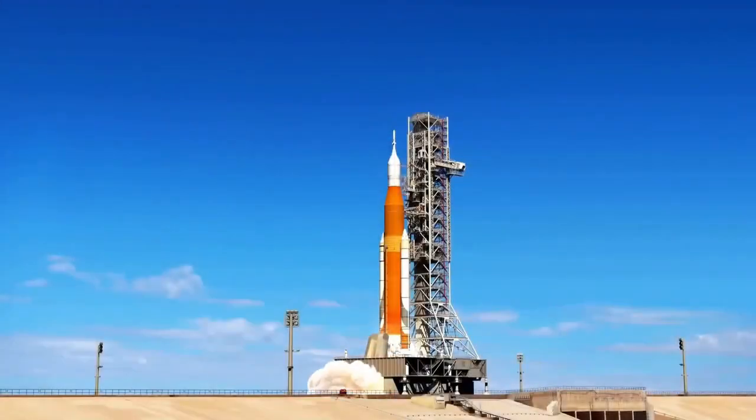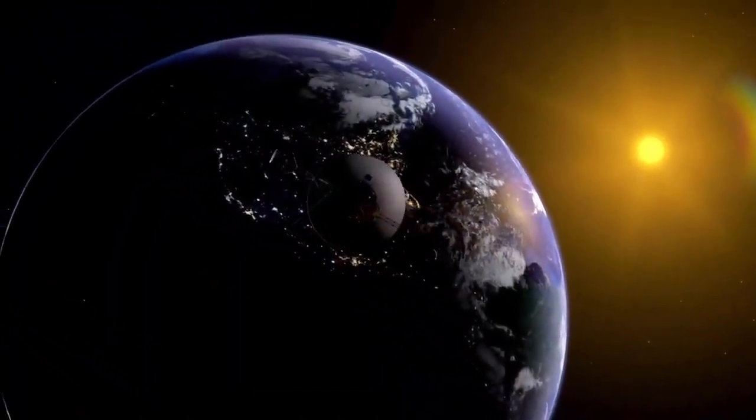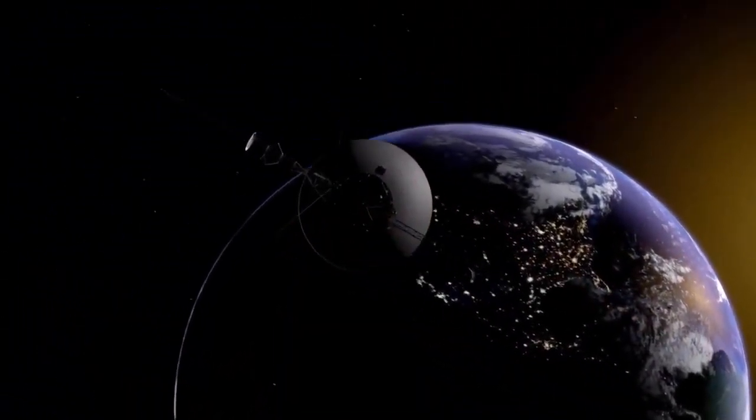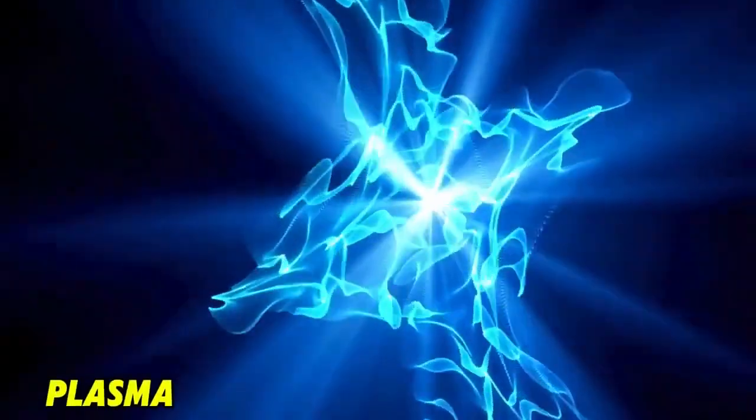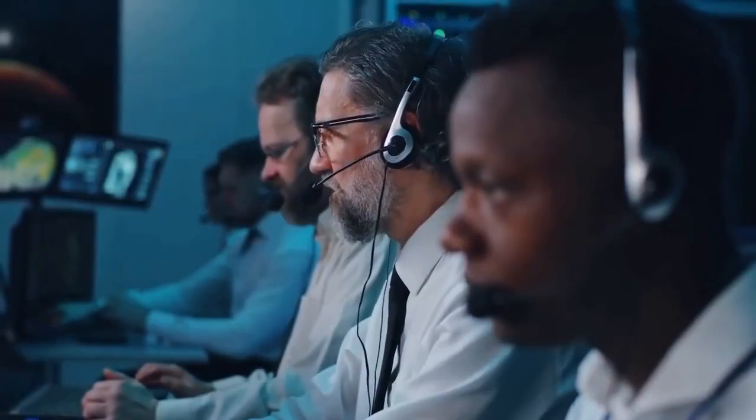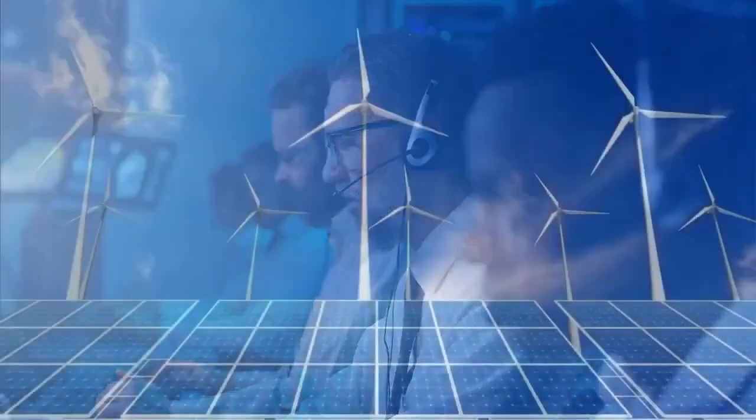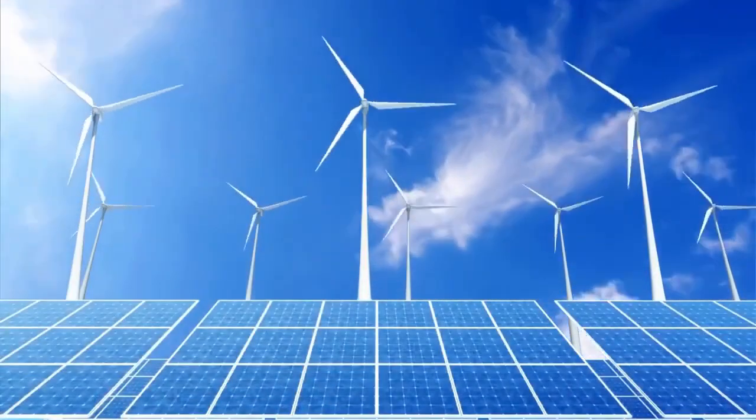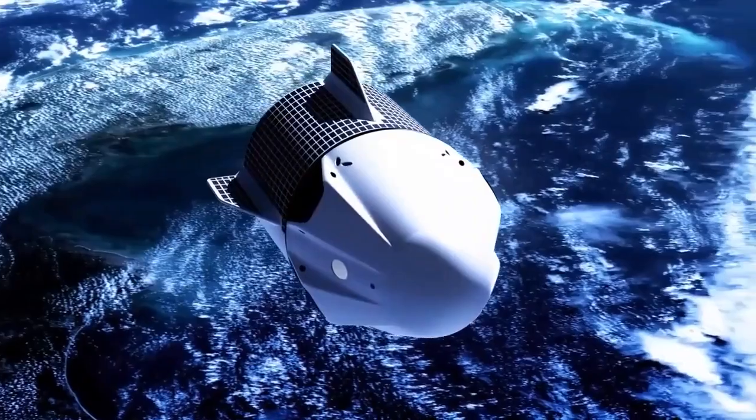As Voyager 2 moves deeper into this uncharted region, its instruments are perfectly designed to examine the density, temperature, and composition of the medium, which consists of interstellar dust, plasma, and cosmic rays. By comparing data from Voyager 2 with its twin, Voyager 1, researchers may develop a more detailed picture of the interstellar environment and how it interacts with the heliosphere.